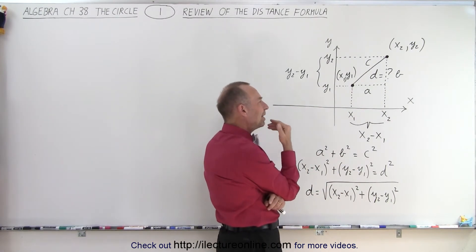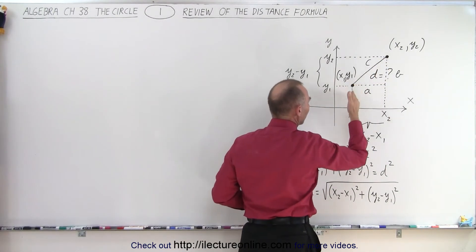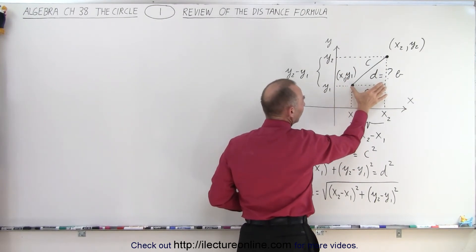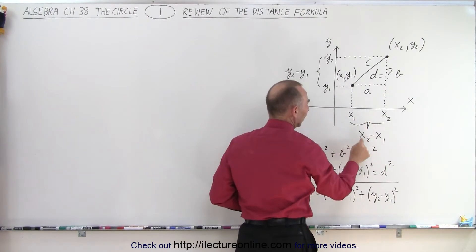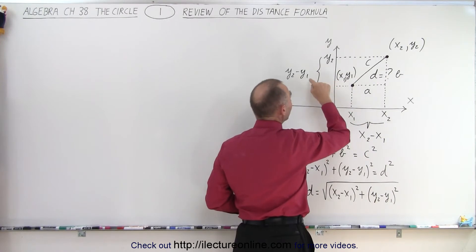Now, if we then find the location of that point on the X-axis, and the location of this point on the X-axis, and same on the Y-axis, we can see that the length, the distance A, is equal to the difference between X2 and X1. So X2 minus X1 is equal to A. And Y2 minus Y1 is equal to B.